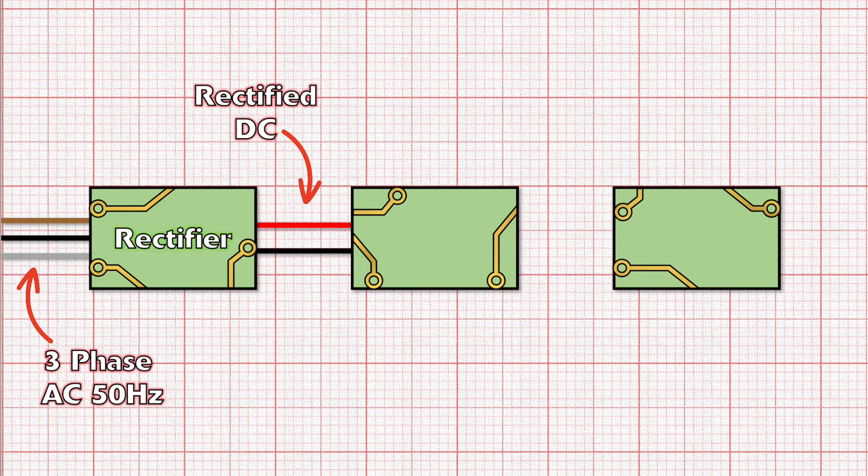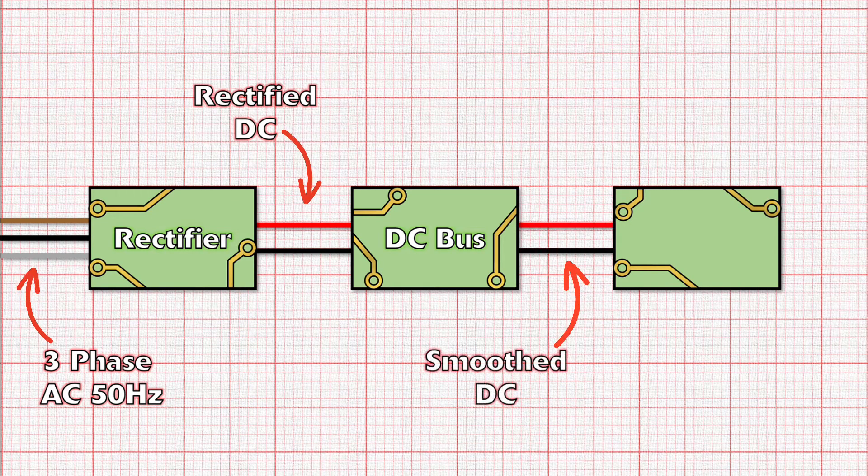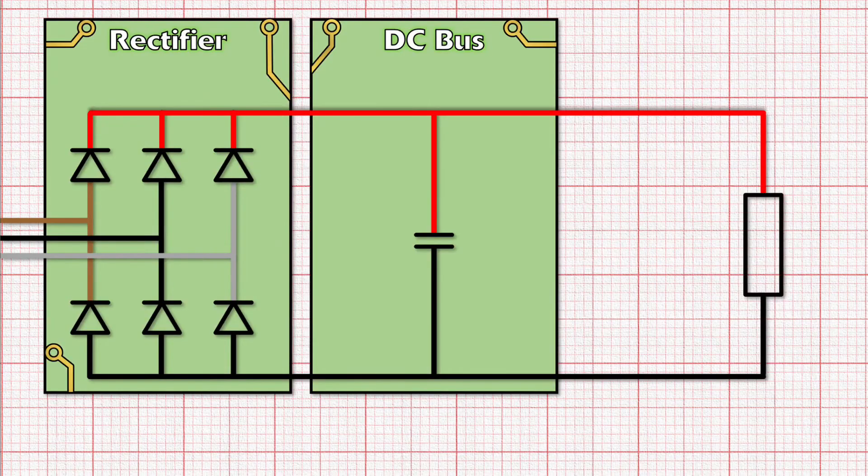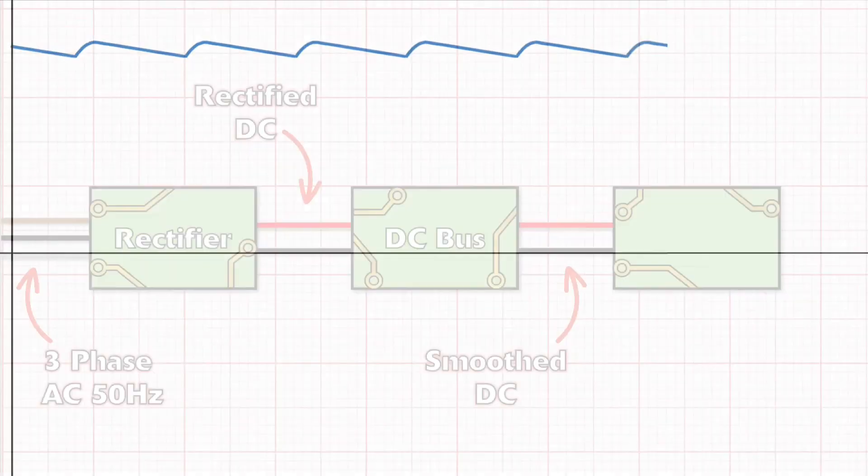This wobbly DC waveform then moves on to the next stage of the internal circuitry of the VFD, which is called a DC bus. All this part does is take that wobbly waveform and smooth it out using capacitors. These charge up with a bit of current while the current is rising, and then as it drops away it releases that current back into the circuit, meaning that the waveform starts to look smoother.